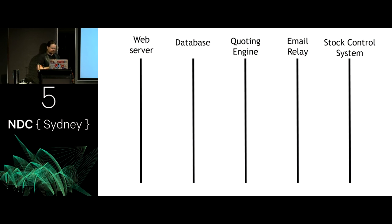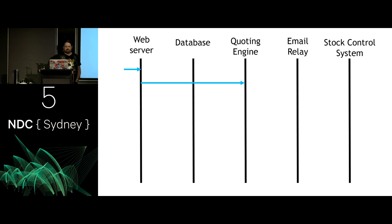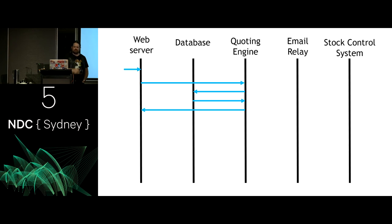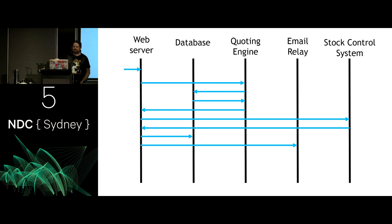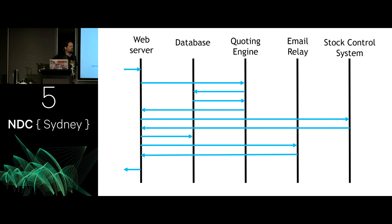Let's look at an e-commerce example. A request comes into the web server. Web server asks the quoting engine: can you give me a price on six widgets? Quoting engine asks the database: what's the widget price list? Database says the widget's $25. Quoting engine returns the quote. Web server checks with stock control: do we have it? Stock control confirms six widgets available. Tell the database we've sold six widgets to customer X. Talk to the email relay: send customer X a notification saying we've received your order. Email relay confirms sent. Web server responds 200 OK. Pretty standard — nothing too controversial, we've all built systems that work along these lines.